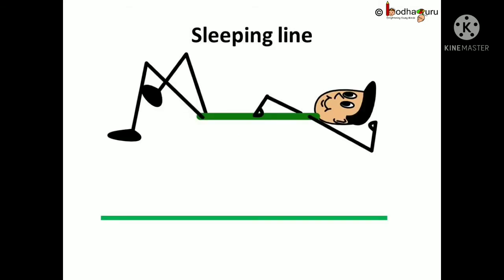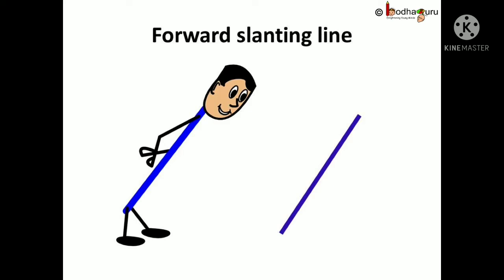How do we write 7? Remember, sleeping line and slanting line. Forward slanting line. Let us use both of them to write 7.